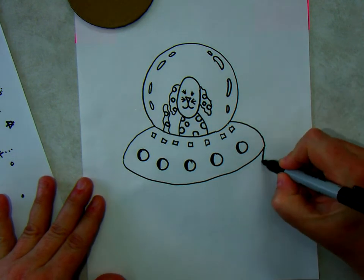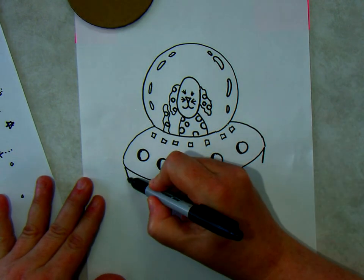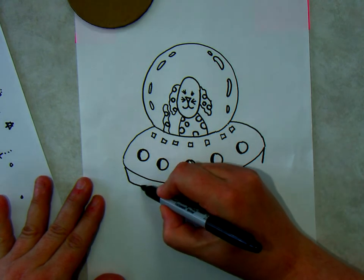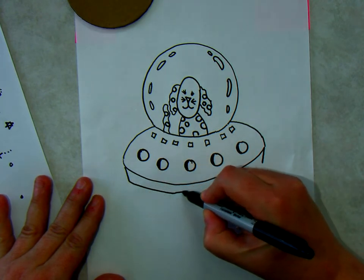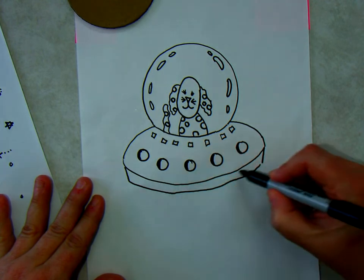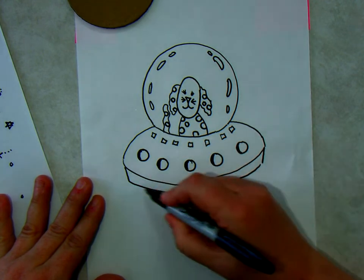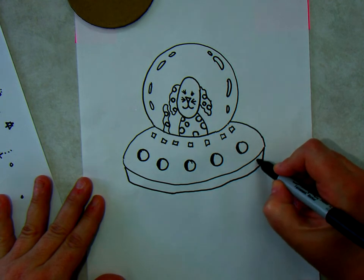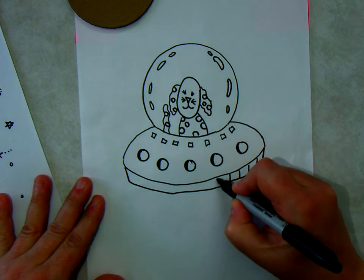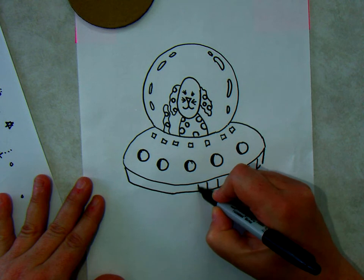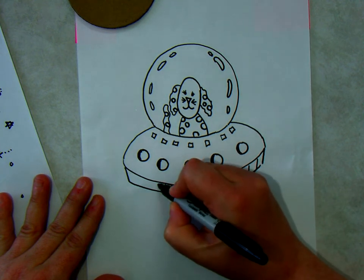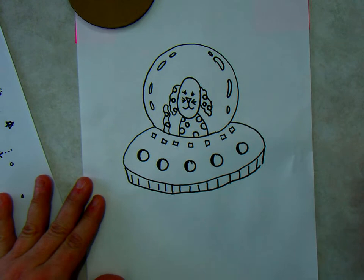Now for the bottom of the spaceship, I'm going to put two lines coming down on the side. I'm going to connect the lines. I'll follow this oval here, the bottom of the oval, and connect the lines. I think I'll put some stripes, some vertical up and down lines, filling in the bottom of the ship.